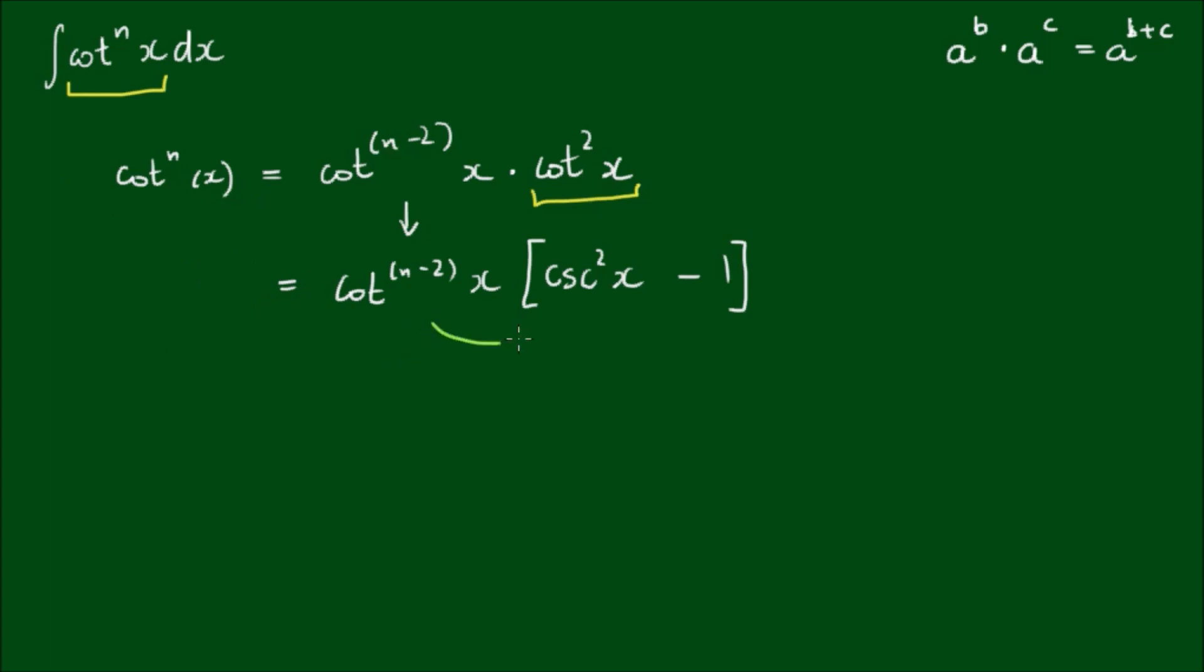So the next step is to expand the first term into the brackets, and this leaves us with cot to the n minus 2 power of x by cosecant squared x minus cot to the power of n minus 2 of x.